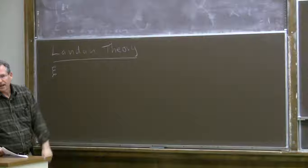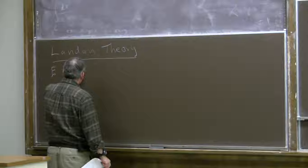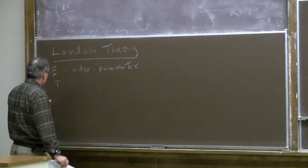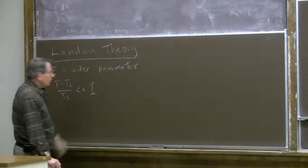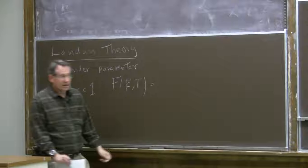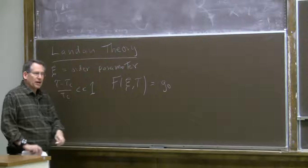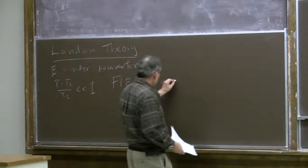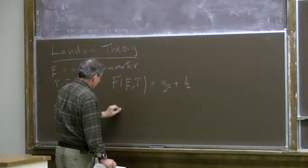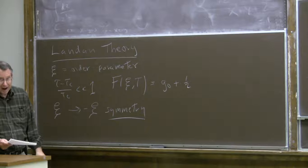If we denote that order parameter — which you can think of as being like the magnetization in our spin system example — and consider the temperature to be close to the critical temperature, so that (T minus T_c) divided by T_c is small, then the free energy as a function of order parameter and temperature has a constant term independent of the order parameter. I'm assuming there's an order parameter goes to minus order parameter symmetry, like in the magnetic model, so there are no odd terms.